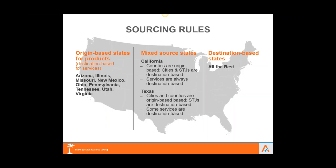Sometimes smaller businesses change how they go to market and start entering many states quickly without realizing the sourcing rules. Sourcing rules determine what rate we attach to the transaction — is it based on where it's going (destination-based) or where it started (origin-based)? In most states it's destination-based. But in states like Ohio, Tennessee, and Virginia, origin-based rules can apply, and some states have mixed sourcing rules depending on whether it's a product or a service.